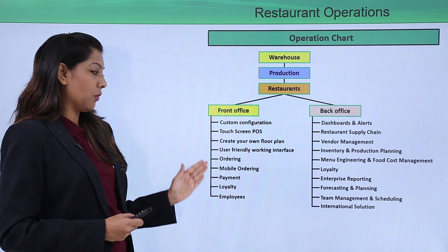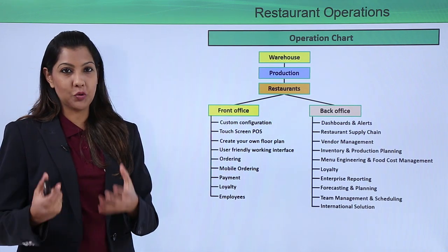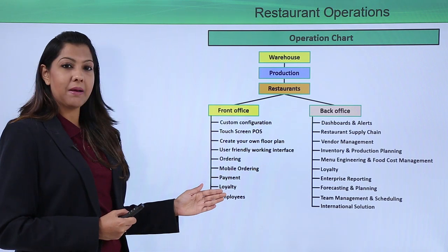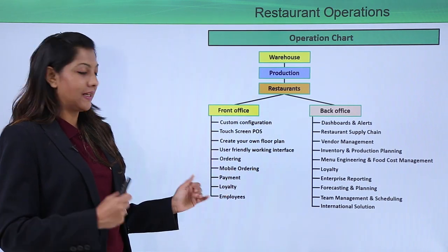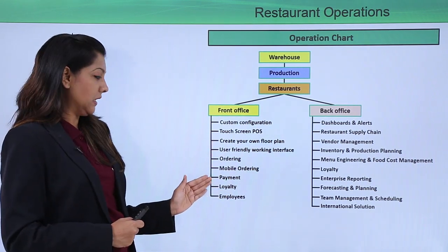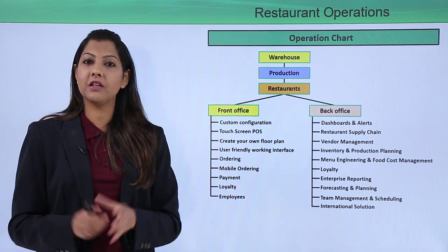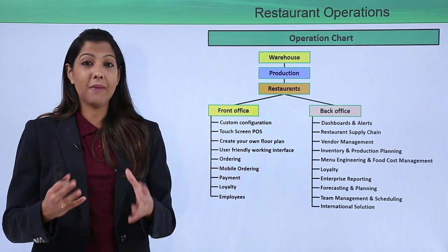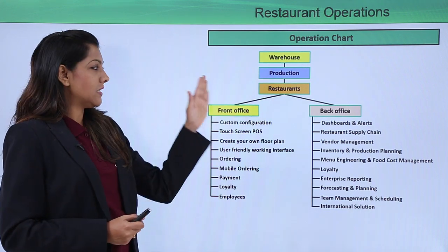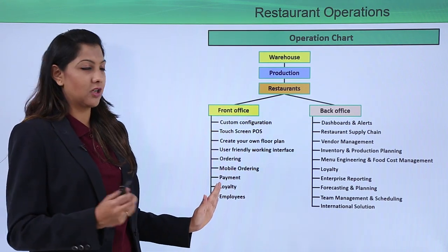On the front office side you also have ordering systems, mobile ordering apps which are popular nowadays, payments processing, and loyalty members — people who come back repeatedly can be given a loyalty card. Your employees — chefs, waiters, and managers — are the people who face your customers and clients.